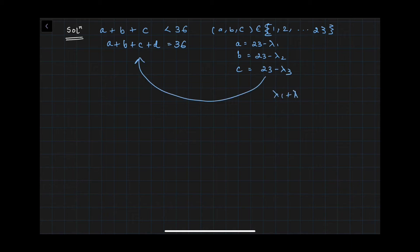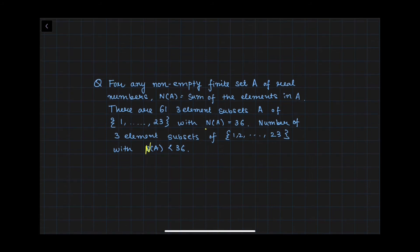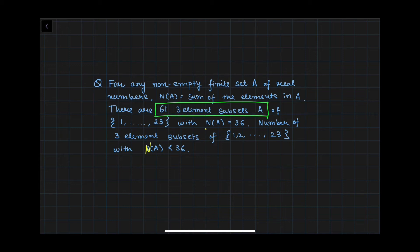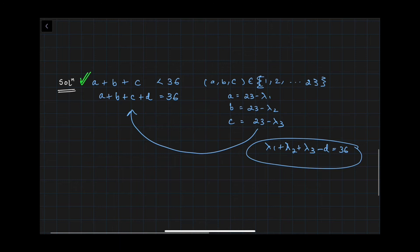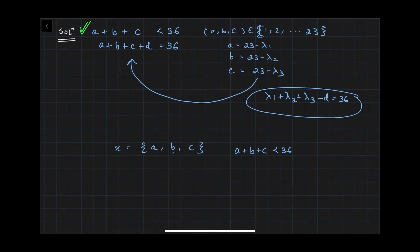If you try to solve that substitution method, you might get a solution but it will be quite lengthy. There's a subtle hint in the question: we're given that the number of ways N(A) = 36 is 61. This is extra information which, if we needed the substitution method, would not be required. So there must be another method. Let us define a set X = {a, b, c} such that a + b + c < 36, where a, b, c are distinct values from {1 to 23}.